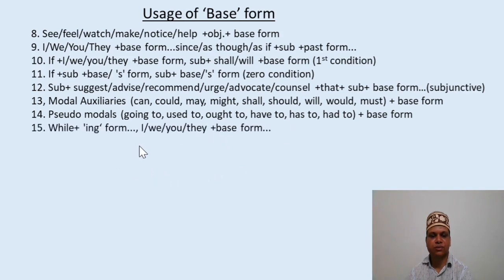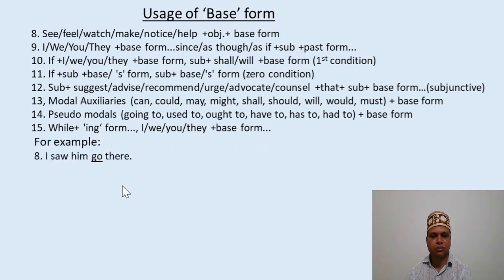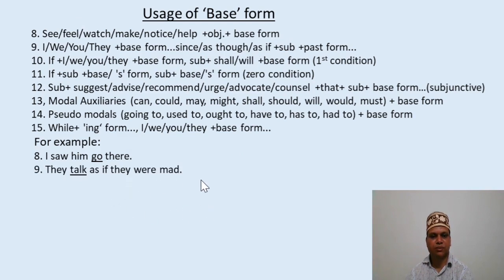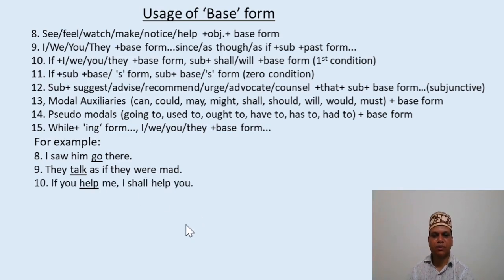If the subject is I, we, you, they, we can use the base form. For example, 'I saw him go' — see + object + base form. 'They talk as if they were mad' — 'as if' is followed by 'were,' which is a past form, so before 'as if' we use present independent tense, meaning we can use the base form. 'If you help me, I should help you' — in second condition we can use the base form because it follows present independence.